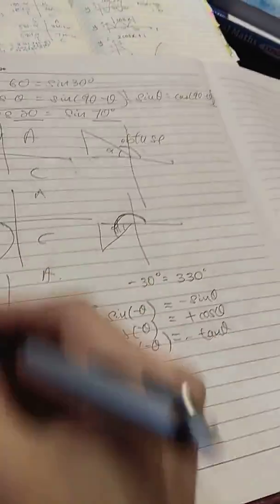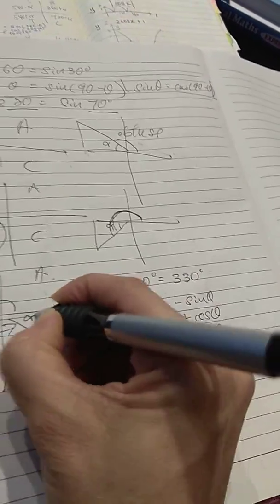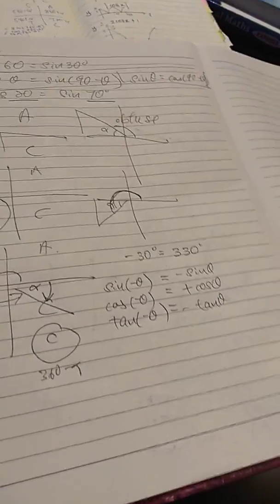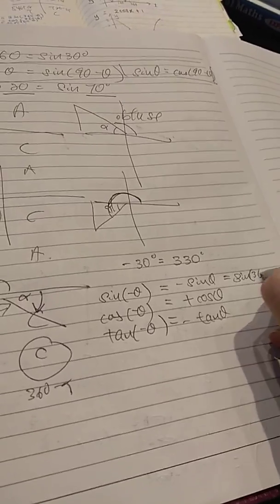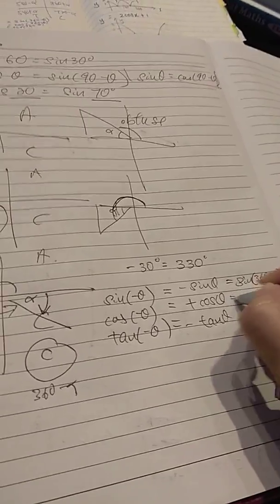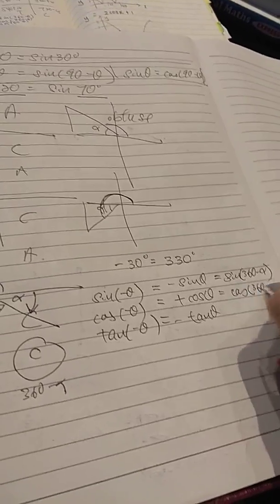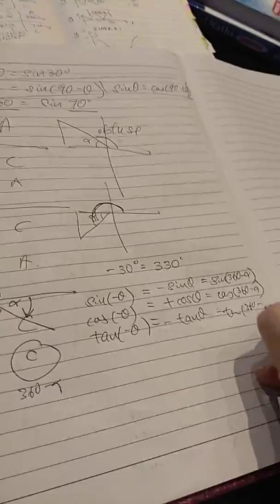Now, another way to present this one is the same as this whole thing. If this is alpha, so isn't it 360 minus alpha? So this is the same as sine 360 minus alpha. It goes to cos 360 minus alpha, tangent 360 minus alpha.